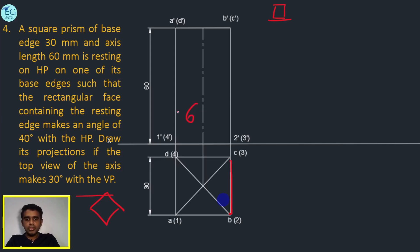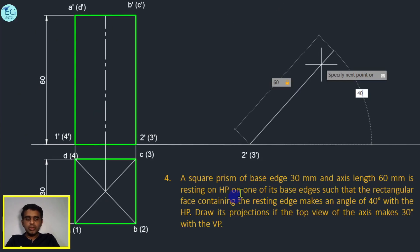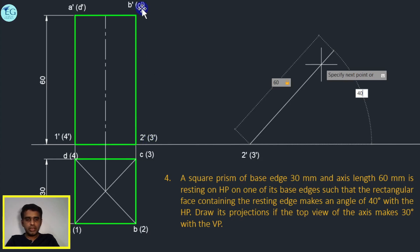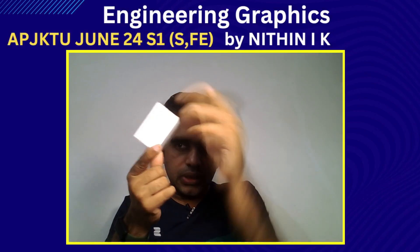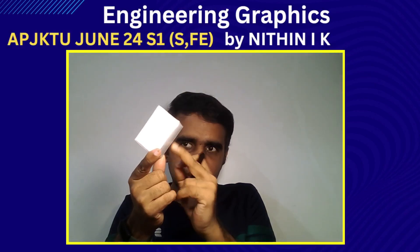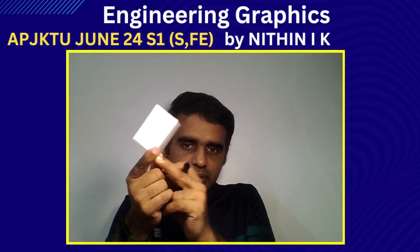In the next stage, the axis contains the rectangular face. The resting edge is 2-3-dash and the rectangular face is 2-3-dash, C-dash. This is the inclination. If you have a base edge, this edge is the rectangular face.